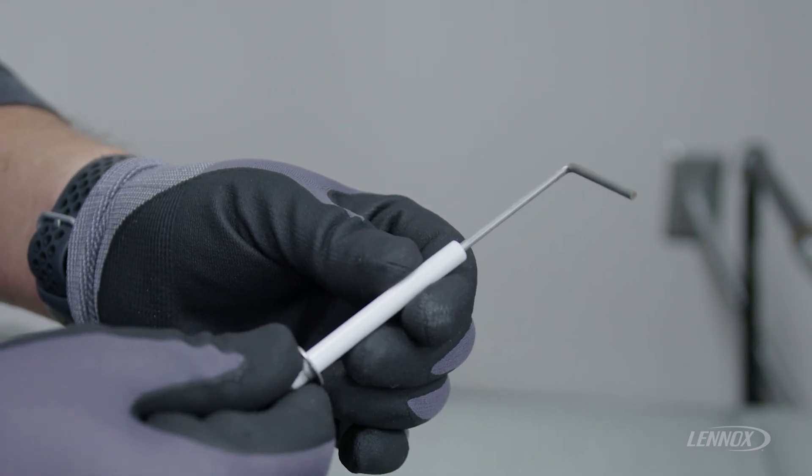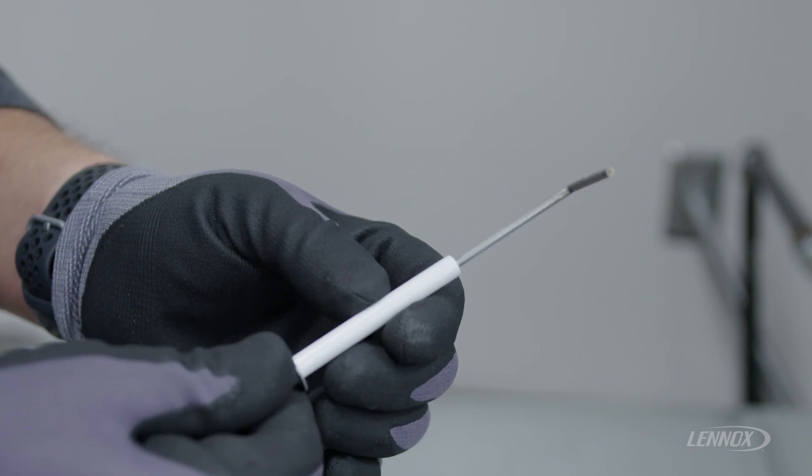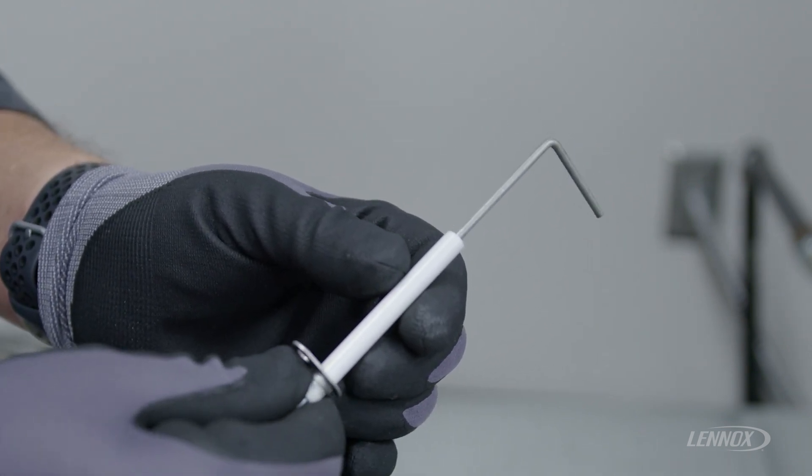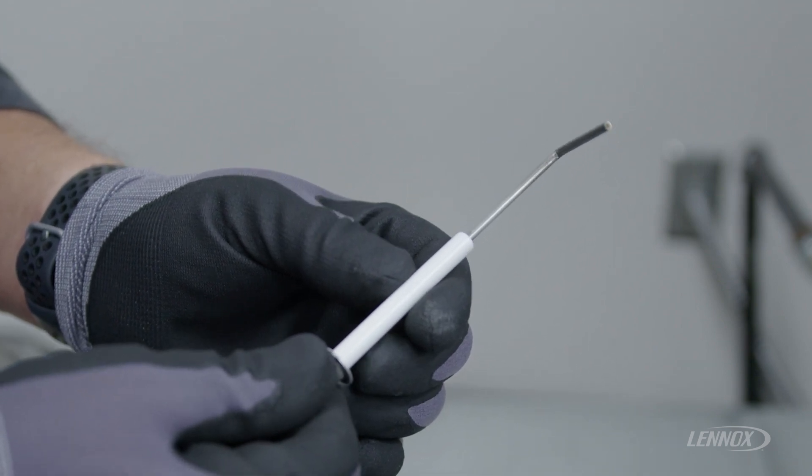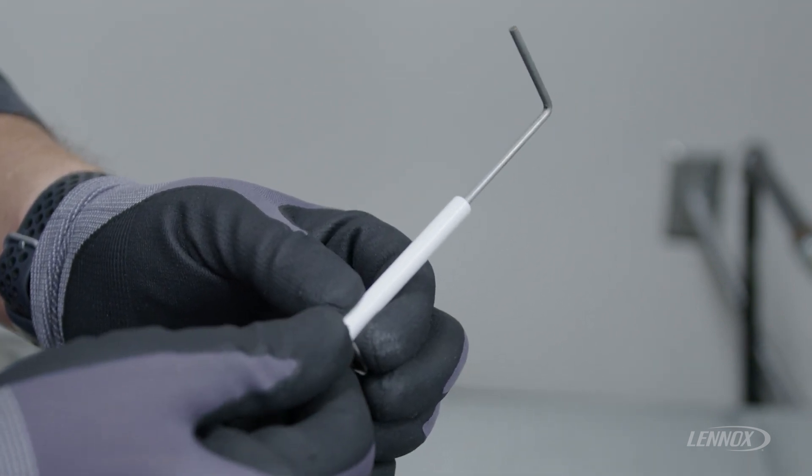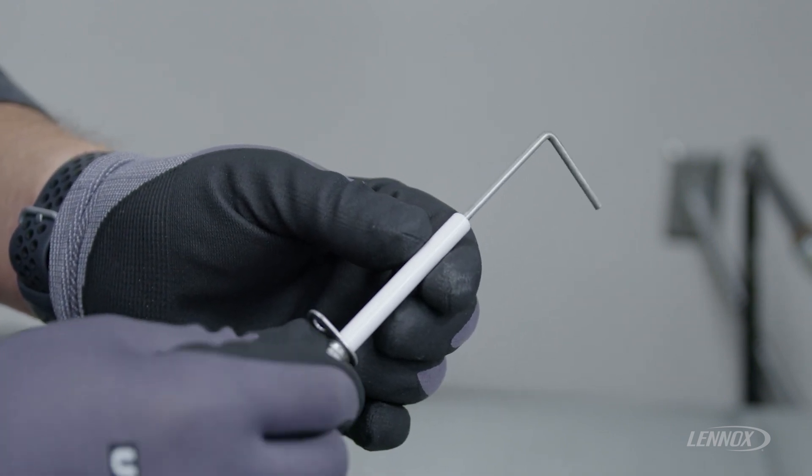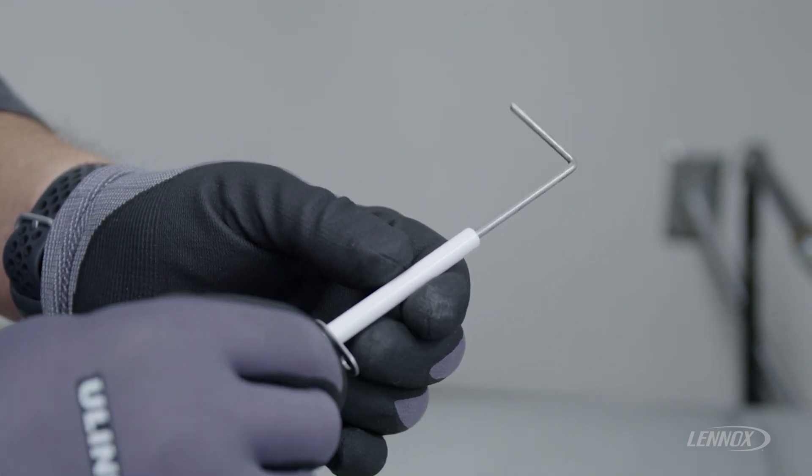Once you have the flame sensor removed, there's another process we have to verify involving the porcelain insulator that is located at the base of the flame sensor. We've got to inspect this porcelain base to make sure there's no cracks, breaks, or interruptions that might delay the process of the flame rectification.